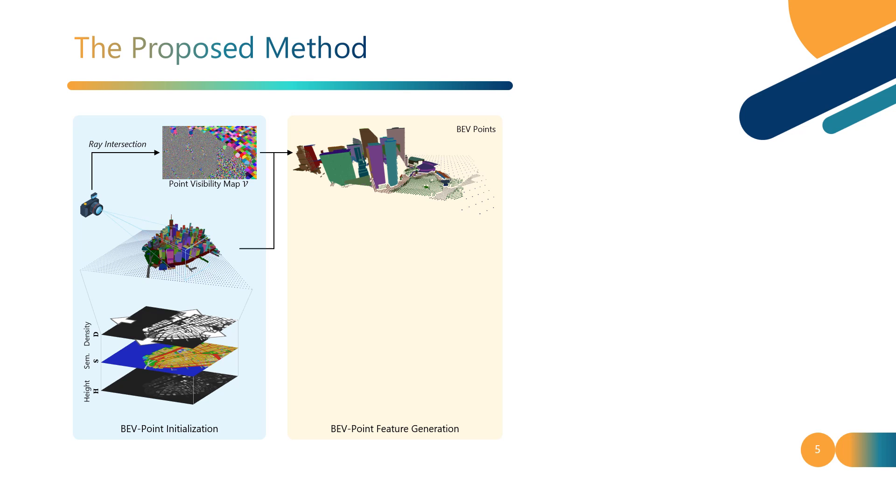The initialized BEV points are assigned with instance labels and the corresponding coordinates in the world coordinate system, denoted as absolute coordinates. Besides absolute coordinates, we introduce relative coordinates, with its origin set at the center of each instance, to specify the normalized point coordinates relative to the instance.